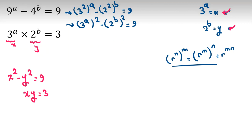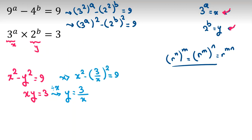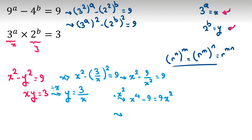For solving this, I use a substitution. If I divide both sides by X — which is valid because X is not 0, since if X were 0 then X times Y would be 0, not 3 — I can replace Y with 3 over X in the first equation. It becomes X squared minus (3 over X) squared equals 9, which is X squared minus 9 over X squared equals 9. Multiplying both sides by X squared gives X to the 4 minus 9 equals 9X squared, so X to the 4 minus 9X squared minus 9 equals 0.